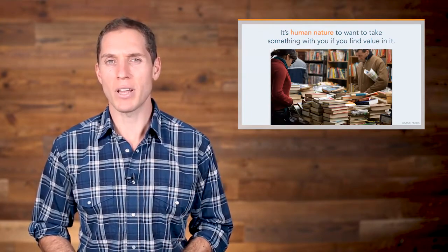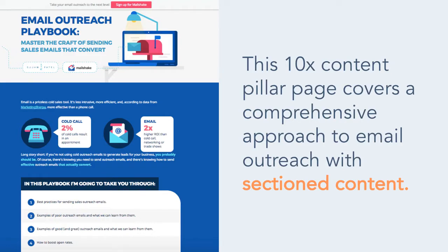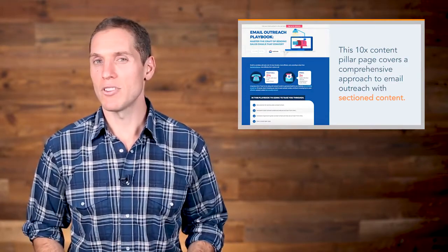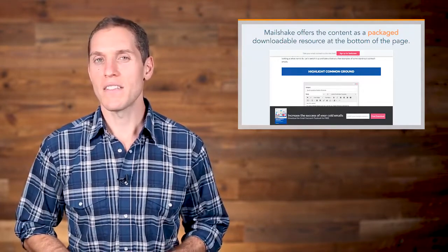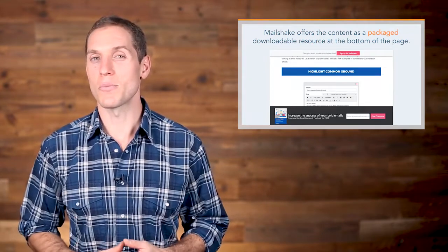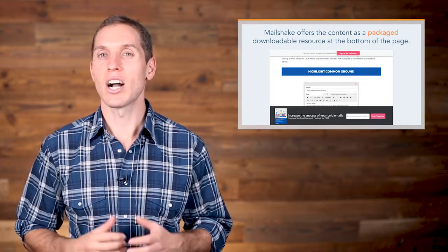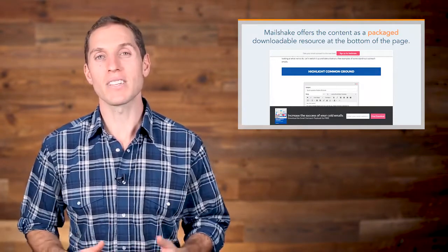For example, let's take a look at this 10x content pillar page on email outreach created by Mailshake, a simple cold email outreach tool. This 10x content pillar page covers a comprehensive approach to email outreach with sectioned content. Let's say you wanted to learn more about what an effective outreach email looks like. Click section 3 at the top of this page — 'examples of good and great outreach emails, and what we can learn from them' — and the link will direct you to that specific section on the page. If you clicked a link in the table of contents at the top of the page, you notice Mailshake offers the content as a packaged downloadable resource at the bottom of the page. This way, if the visitor finds value in the content, they can choose to take it with them. How well is this page performing? In less than a year, this page has been viewed over 43,000 times, shared on social media 398 times, attracted 372 inbound links, acquired 5,321 email opt-ins, and acquired 402 customers.